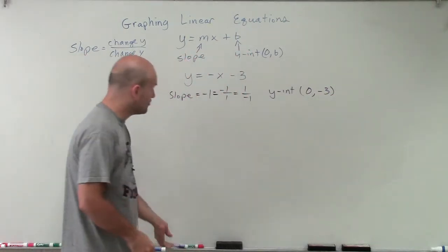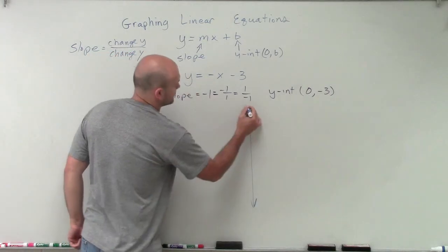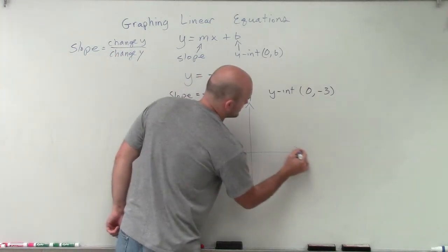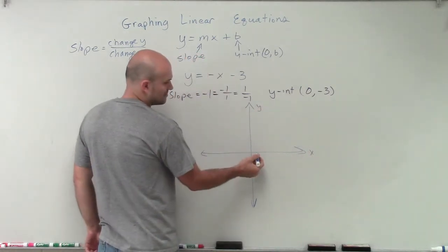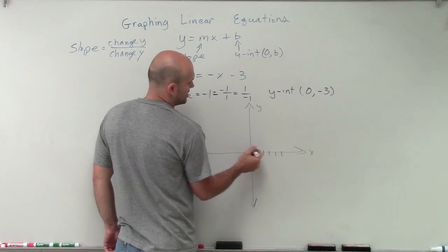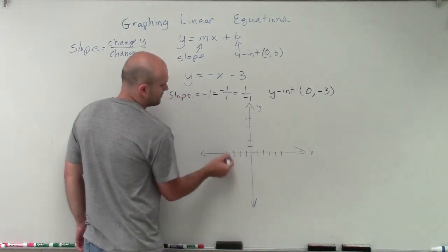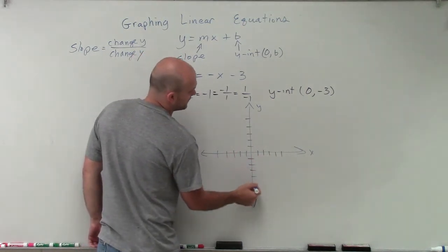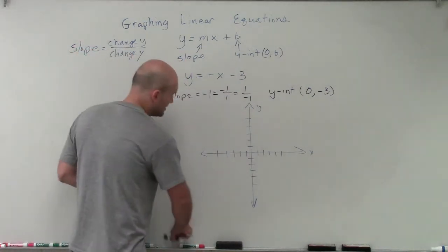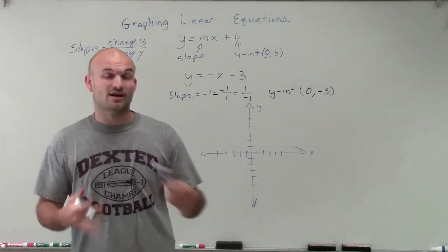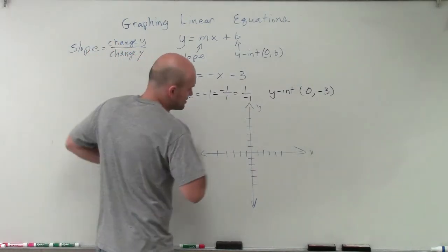Now that I've determined what the slope is and the y-intercept, we're just going to simply graph. I have my y-axis and my x-axis, and we're just going to make some units. My y-intercept is at negative 3. That's usually the starting point we like to start at, because we know that's where the graph crosses the y-axis — so it's usually the easiest point to plot.